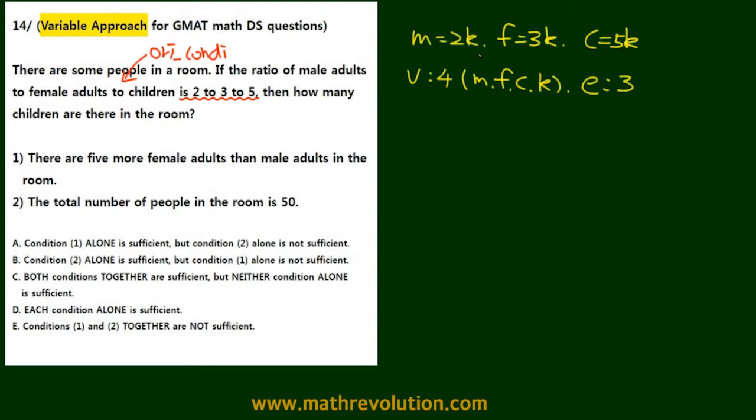We already have three equations: 1, 2, and 3. So we only need one more equation to solve for the four variables. And since conditions 1 and 2 each give an equation, this means that D is likely our answer. And actually D is going to be the answer, so we'll see why that's the case.